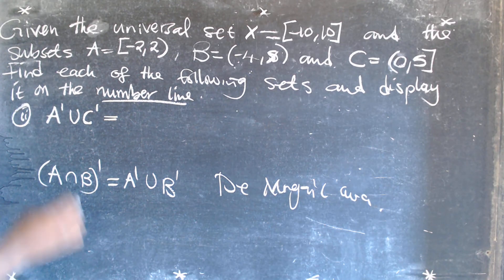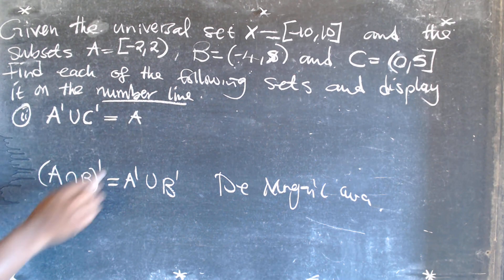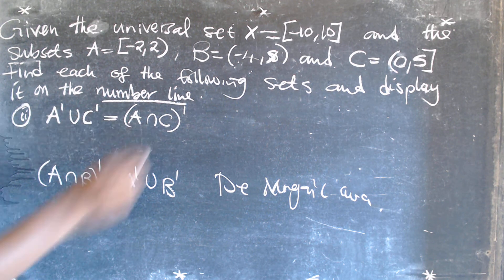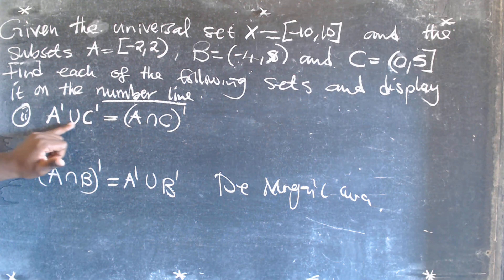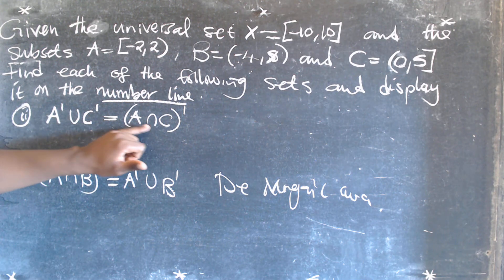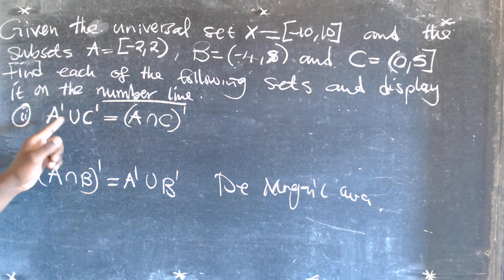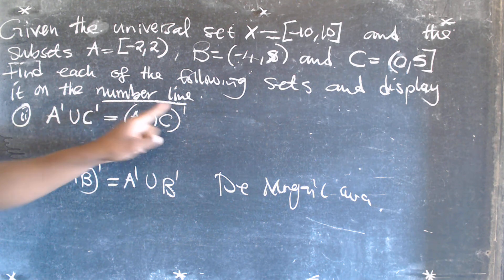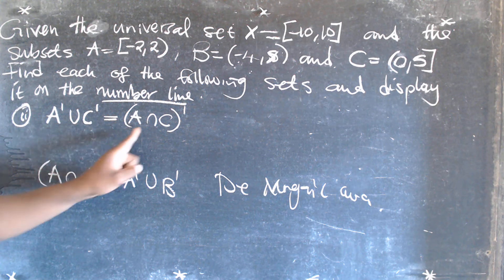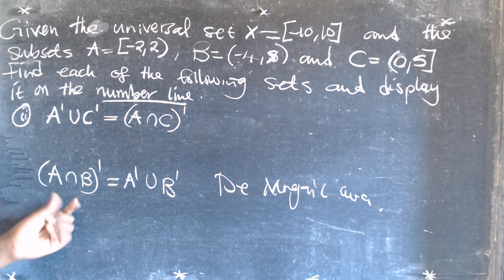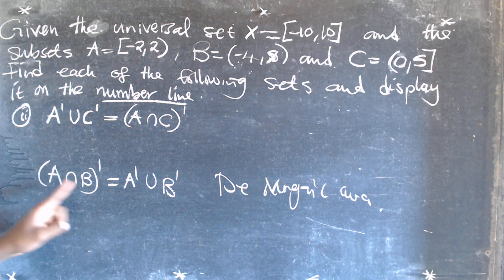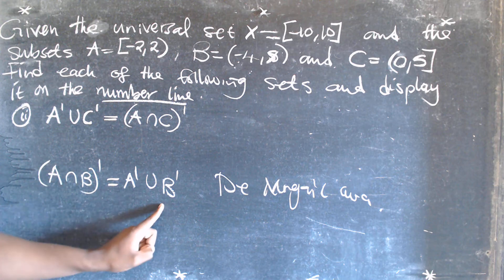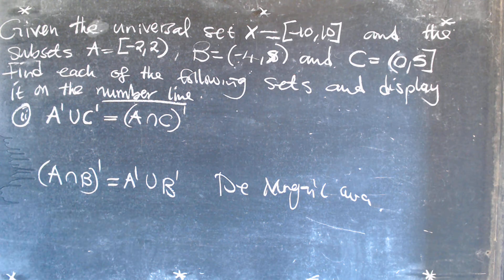By using De Morgan's Law, A intersection C complement is the same as A complement union C complement. When you have complements inside the brackets, the moment you remove this complement outside, you're supposed to change the sign. So distributing the complement inside: A complement, the sign changes to union, and B complement. That is De Morgan's Law.